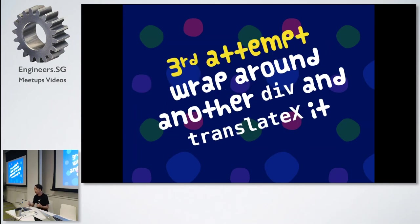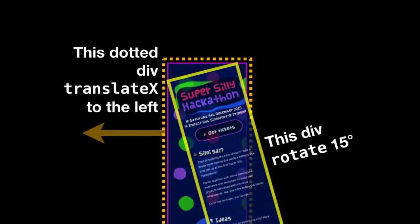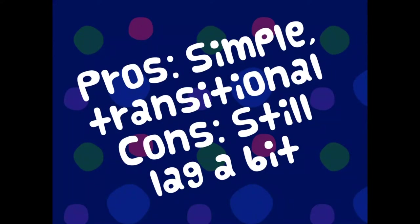I have a third attempt, which is actually simpler than the second. I wrap another div — another container element — around the rotated element. The yellow box is the rotated one; I put another div outside that is not rotated. So instead of moving the yellow box, I move the outer dotted container. I don't have to do Pythagorean theorem calculations anymore — it's just down and then left. Turns out it's quite easy. I can hide scroll bars with overflow and have more control over the whole thing.